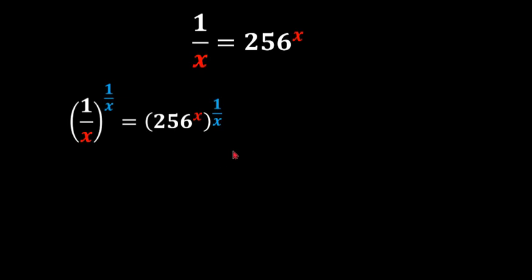So x over x will be 1, therefore it will just be 256 to the power of 1 or nothing. So once we simplify that we would have 1 over x to the power of 1 over x is equal to 256.